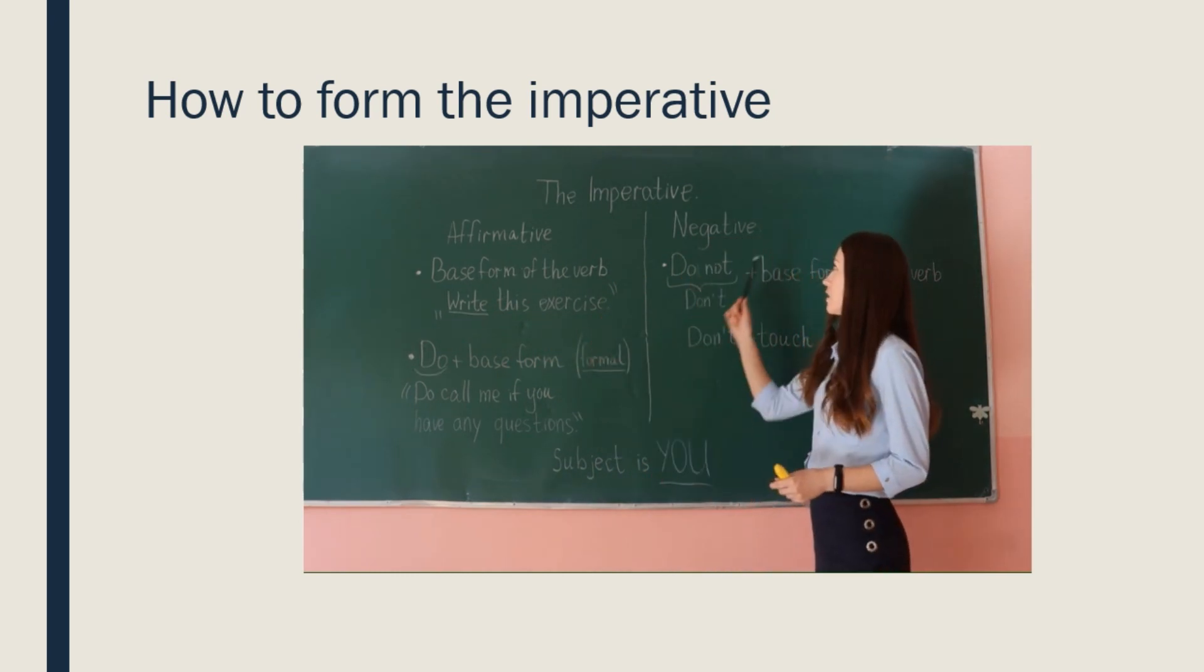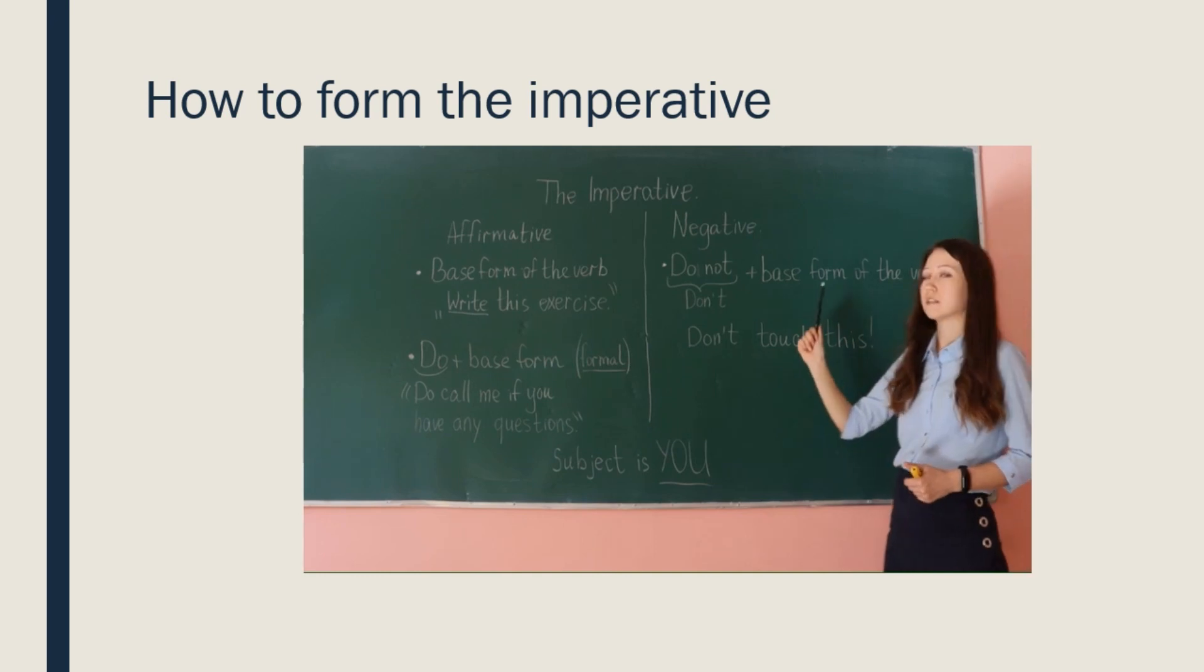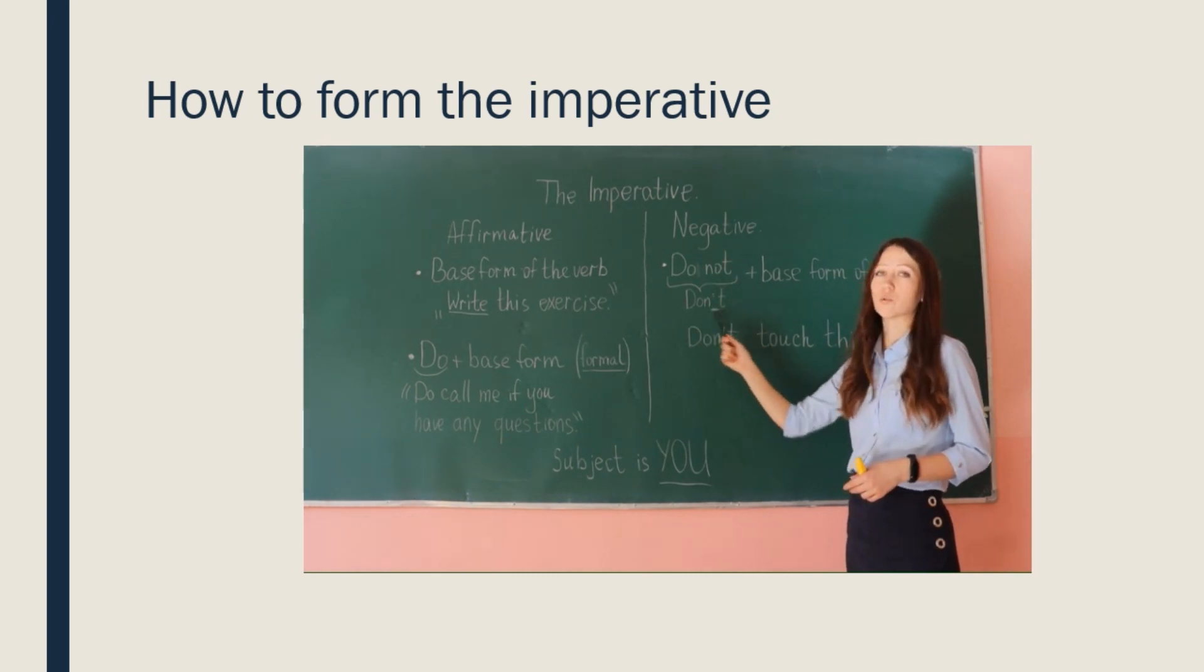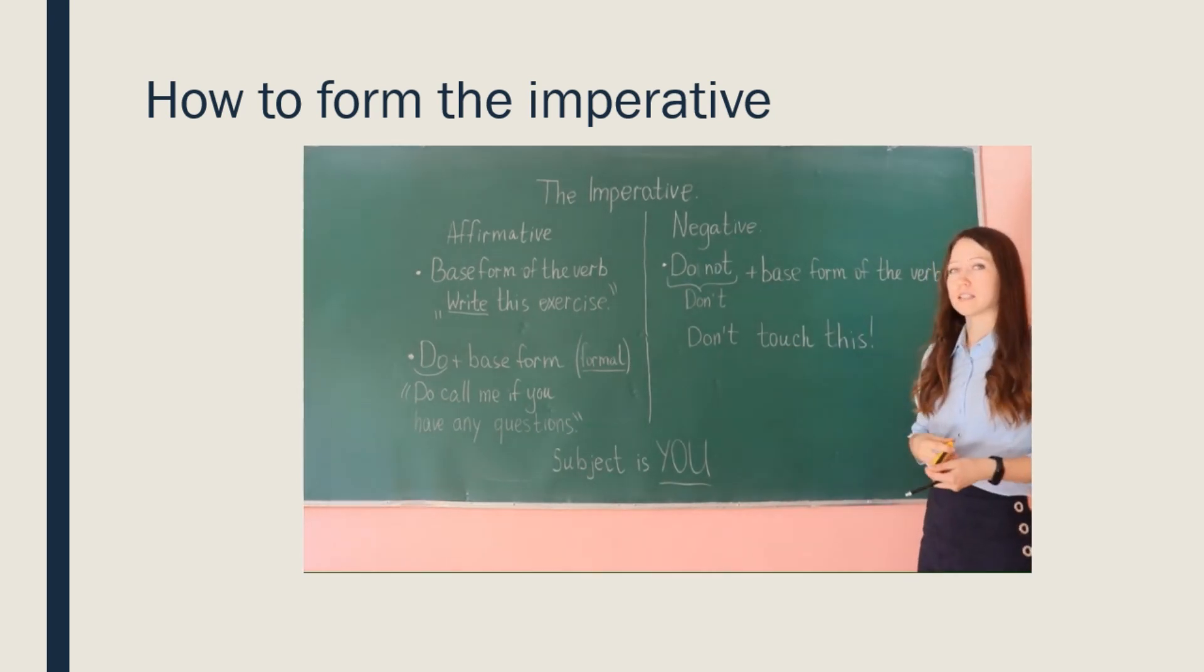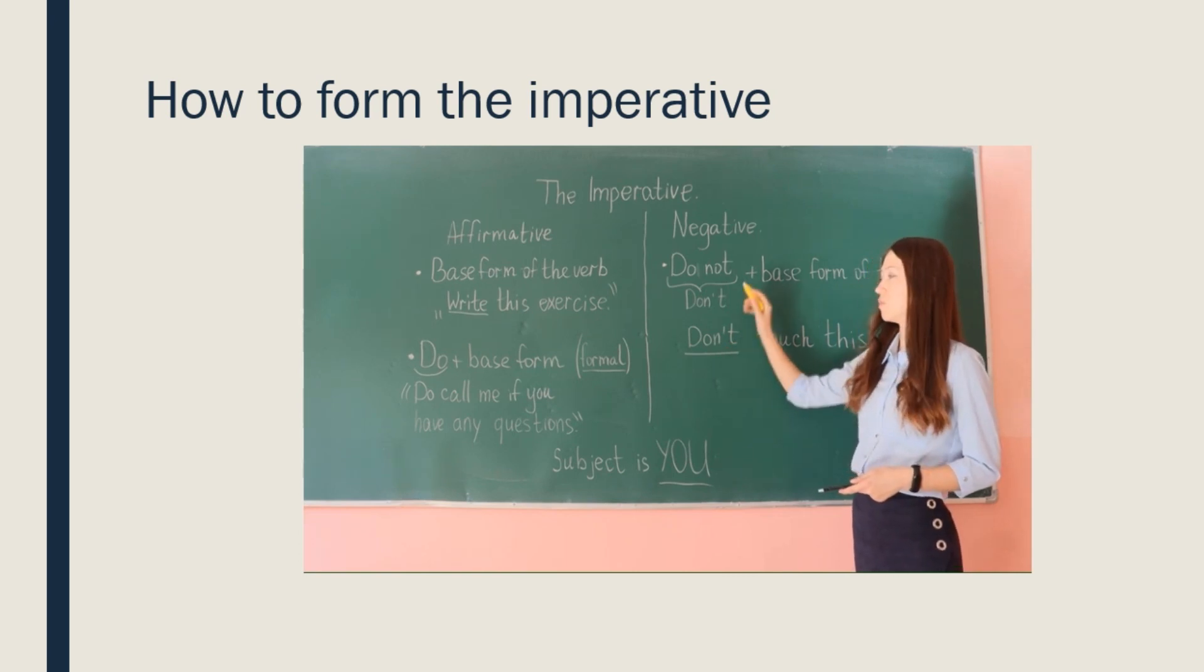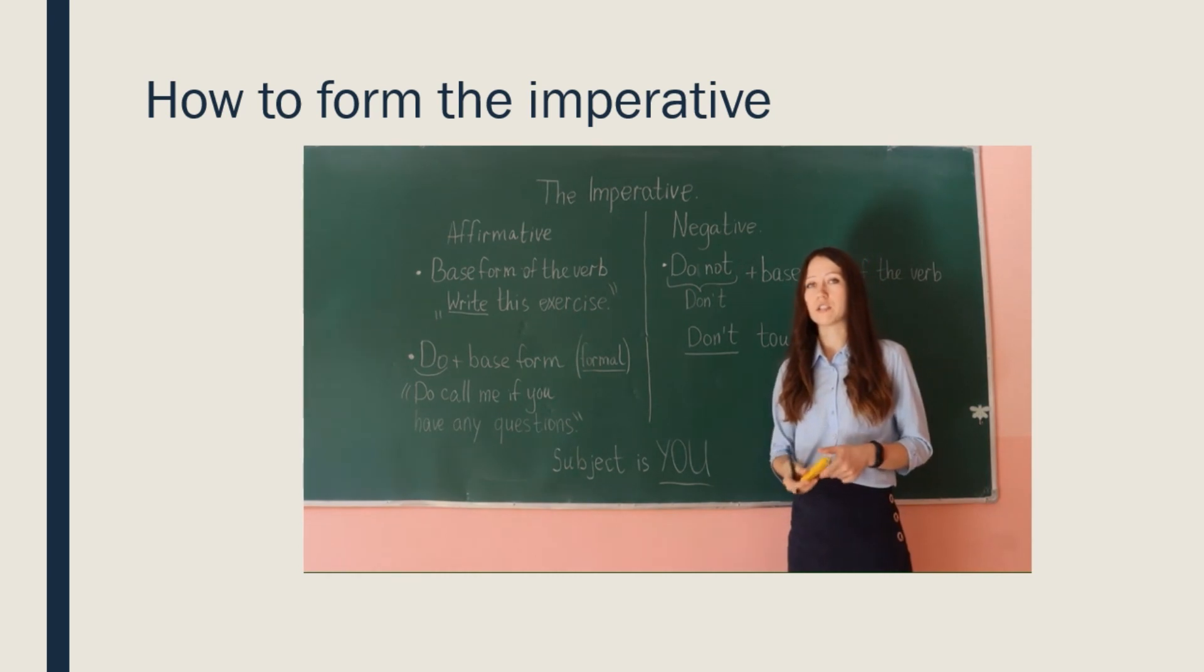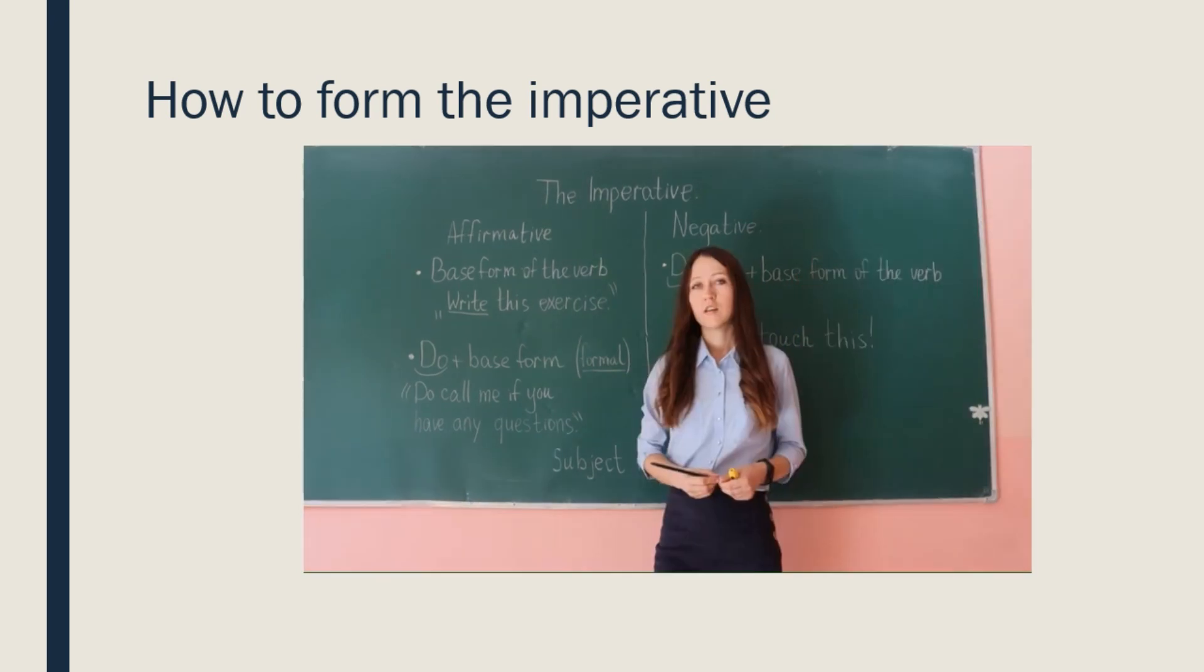Now, let's look at negative sentence. In order to make negative sentence we need do not before base form of the verb. And sometimes, when we're talking, we say do not but don't. Don't plus base form of the verb. For example, don't touch this. Чтобы сделать отрицательное предложение, мы перед глаголом, перед начальной формой глагола ставим отрицание don't или do not. And, as I've already told, that subject is you almost every time. Поэтому в наших предложениях тут подлежащего как бы нет, потому что подразумевается, что всегда обращаются к тебе.